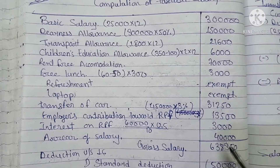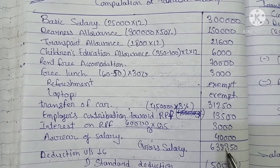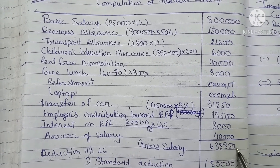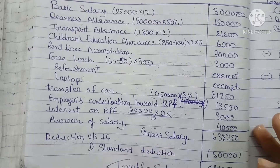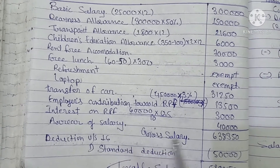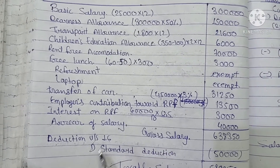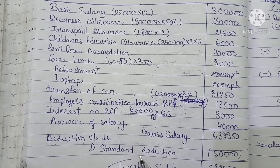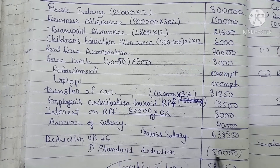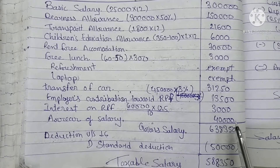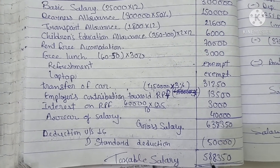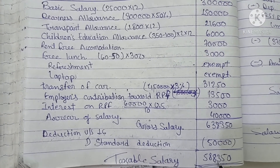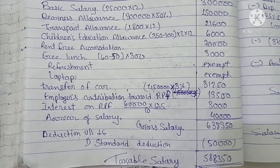Arrears of rent amount to ₹40,000. Adding all components, the total gross salary comes to ₹6,38,350. Under Section 16, the standard deduction is ₹50,000, so the net taxable salary is ₹5,88,350.